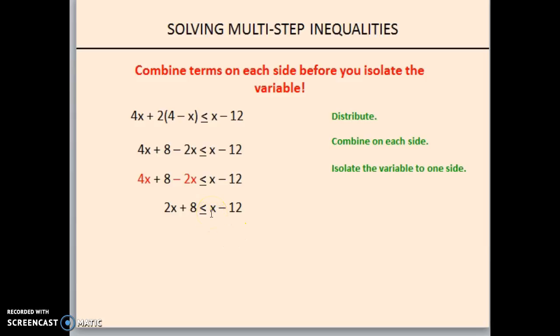Now, we're going to move things around. We can subtract this x from both sides and we end up over here with just an x. We have x plus 8 is less than or equal to negative 12. And then, we have to subtract 8 from both sides. Negative 12 minus 8 is negative 20. Do we have to flip our sign? Nope, we didn't have to divide by any negatives or multiply by any negatives. So, our answer is x is less than or equal to negative 20.